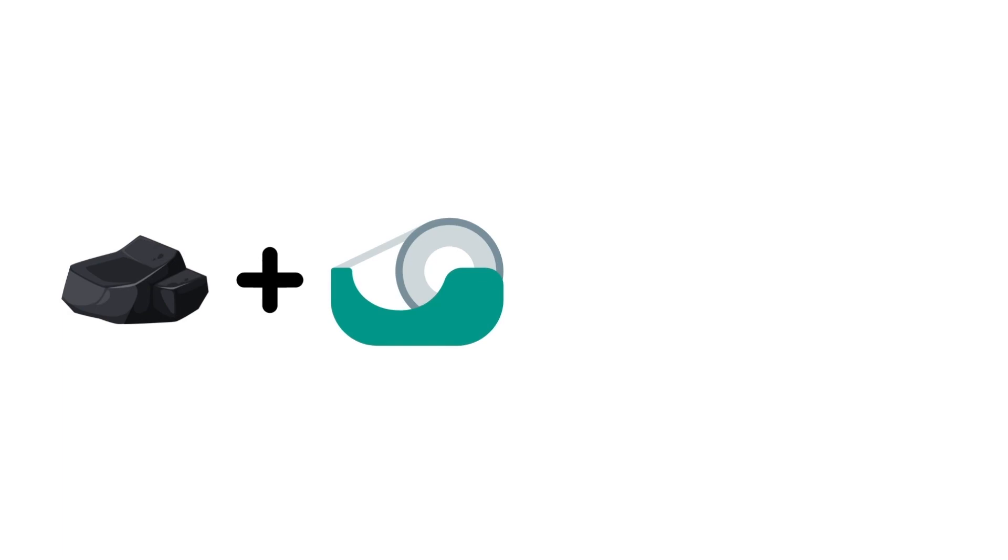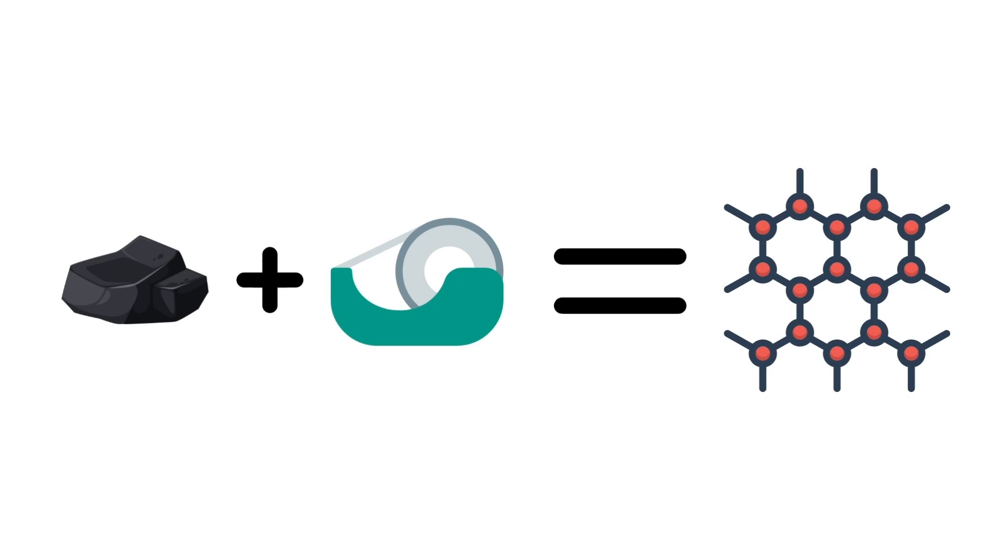And all it took was some graphite and scotch tape. They took the scotch tape and kept peeling it off the graphite until they noticed carbon depositions on the tape, which they later discovered was indeed graphene.